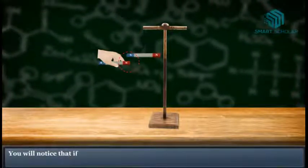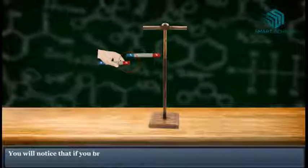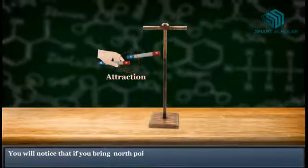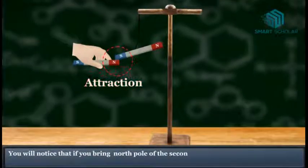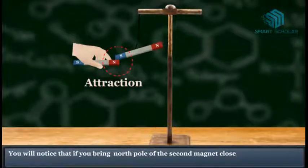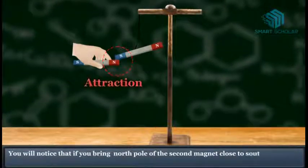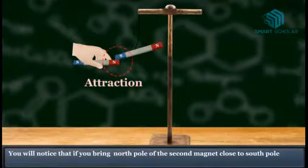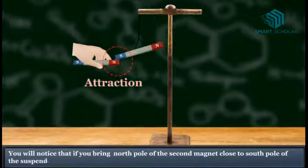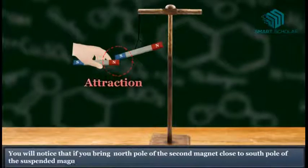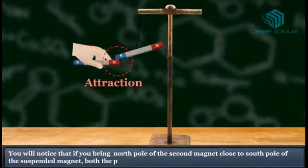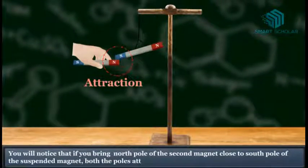You will notice that if you bring the north pole of the second magnet close to the south pole of the suspended magnet, both the poles attract each other.